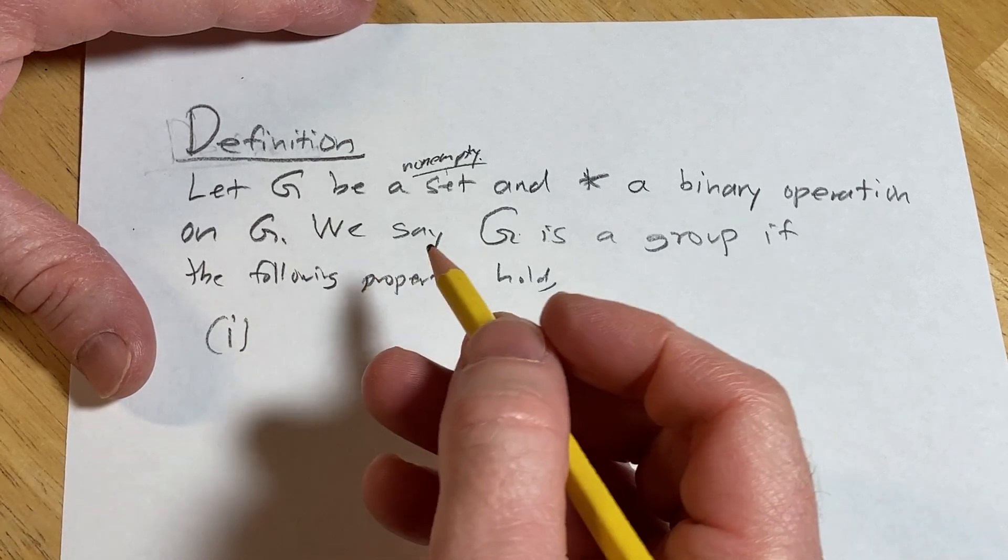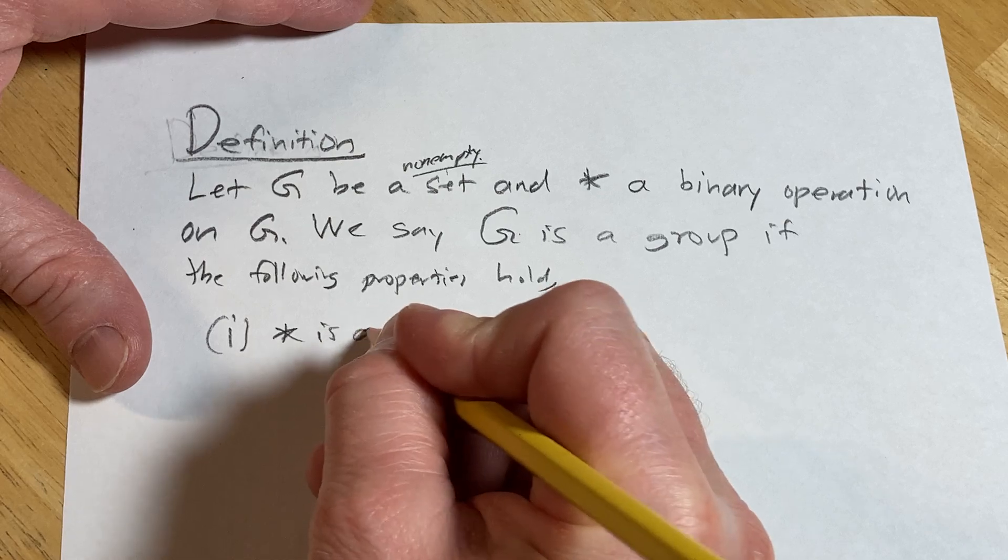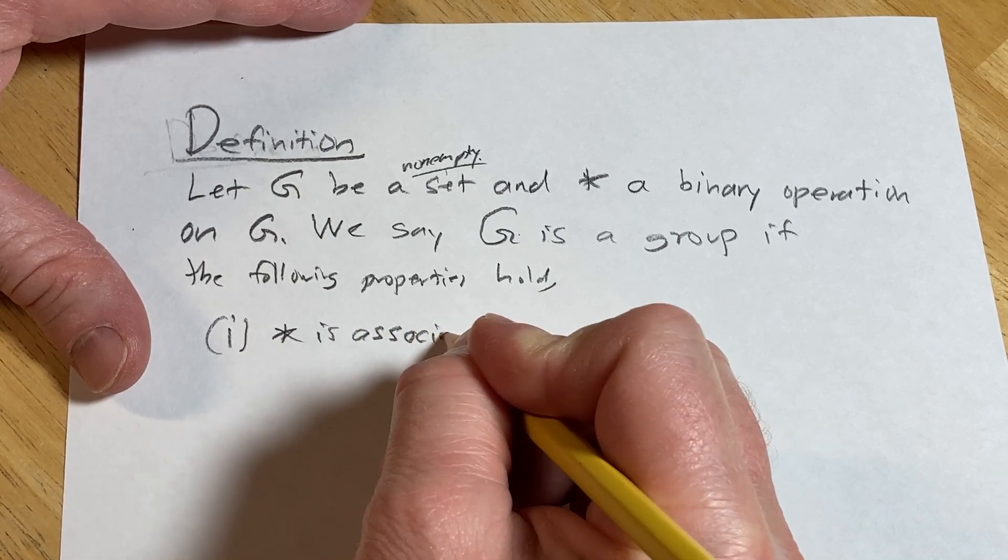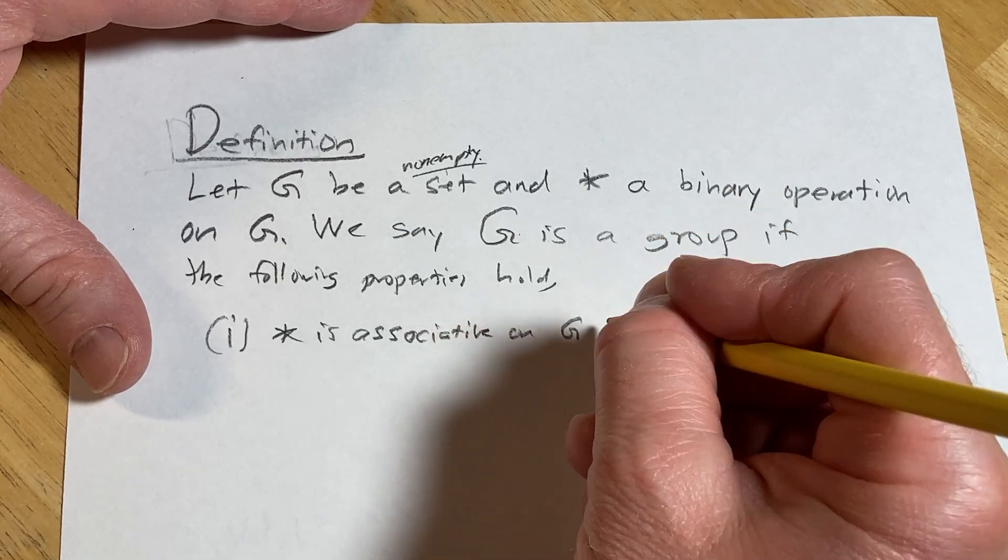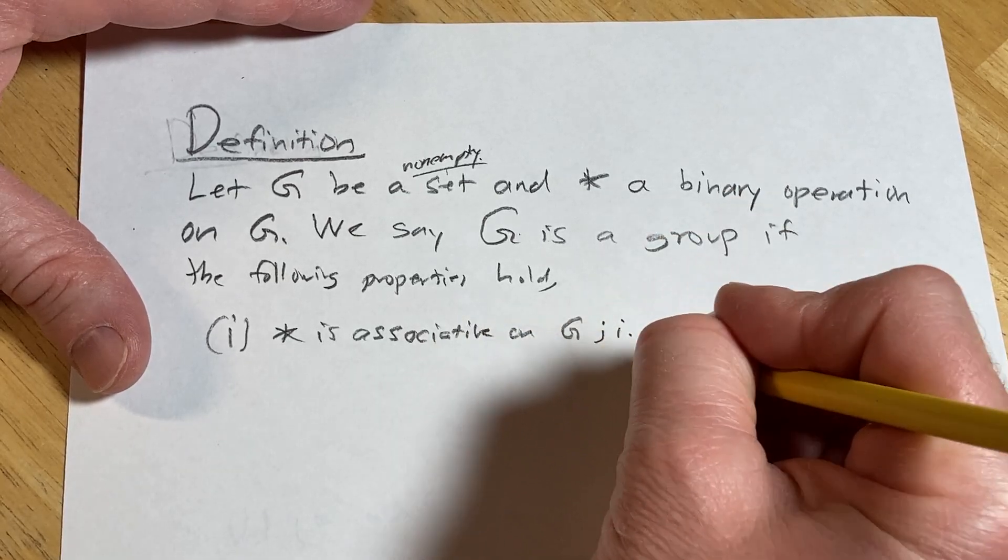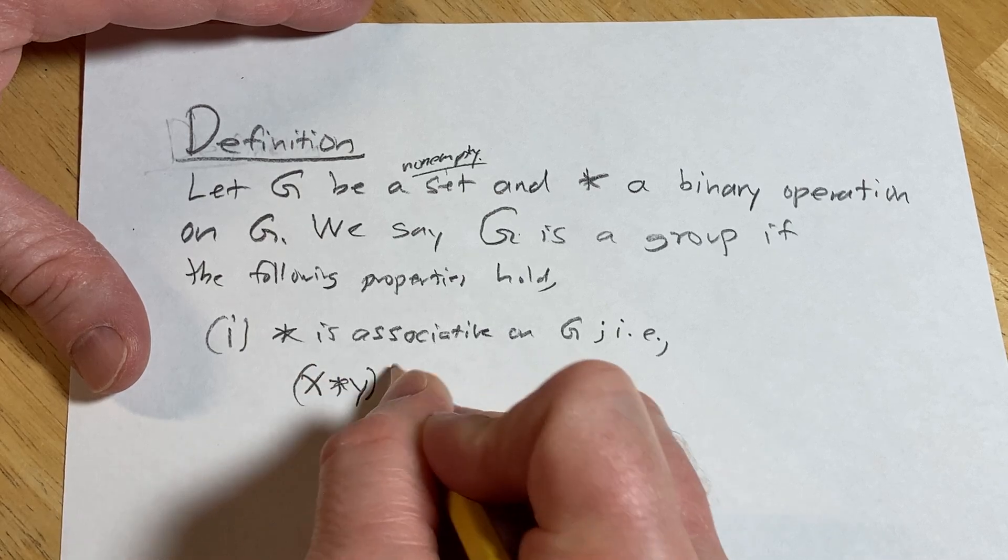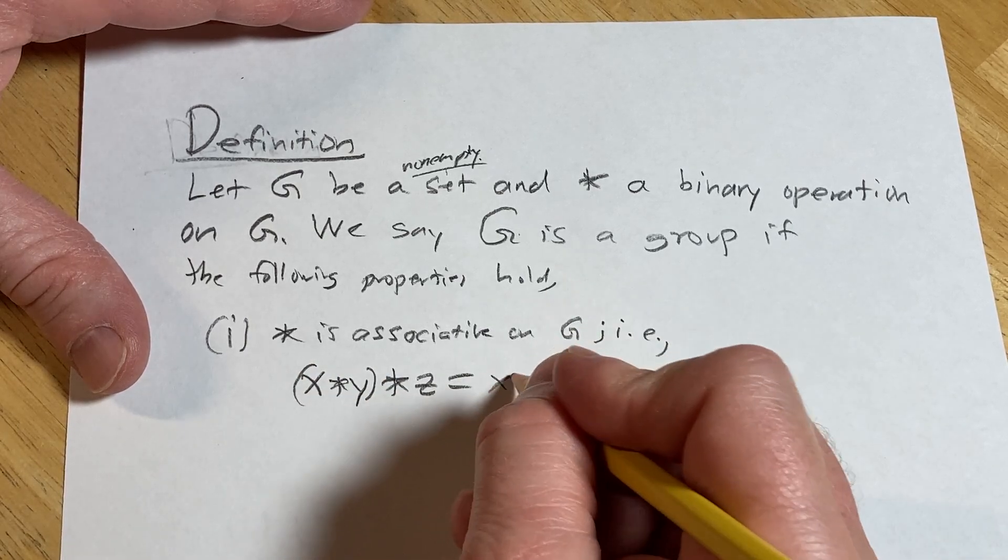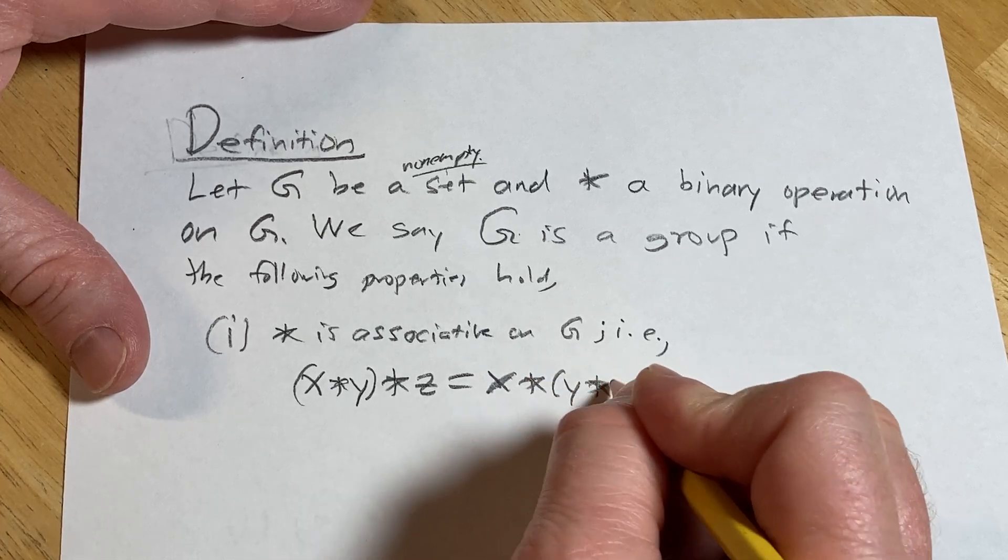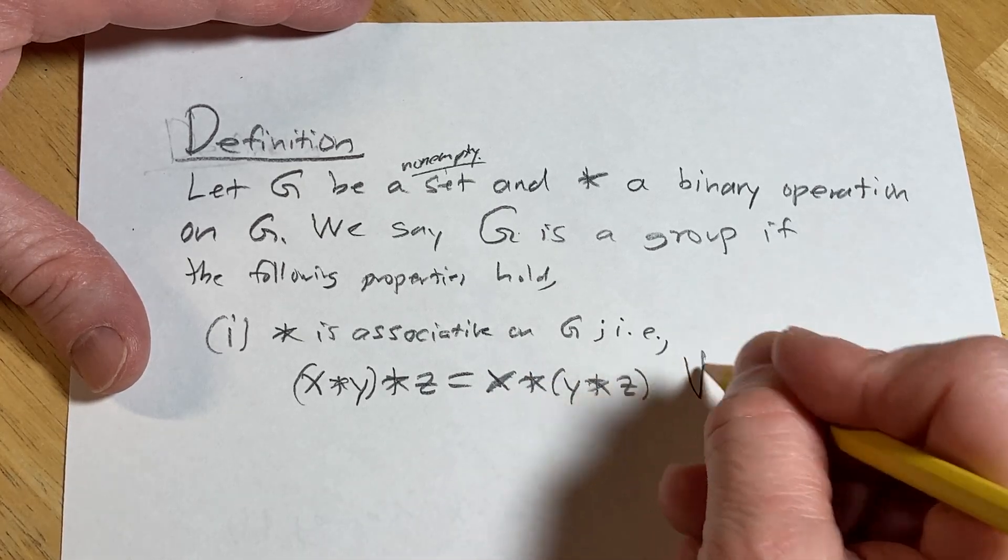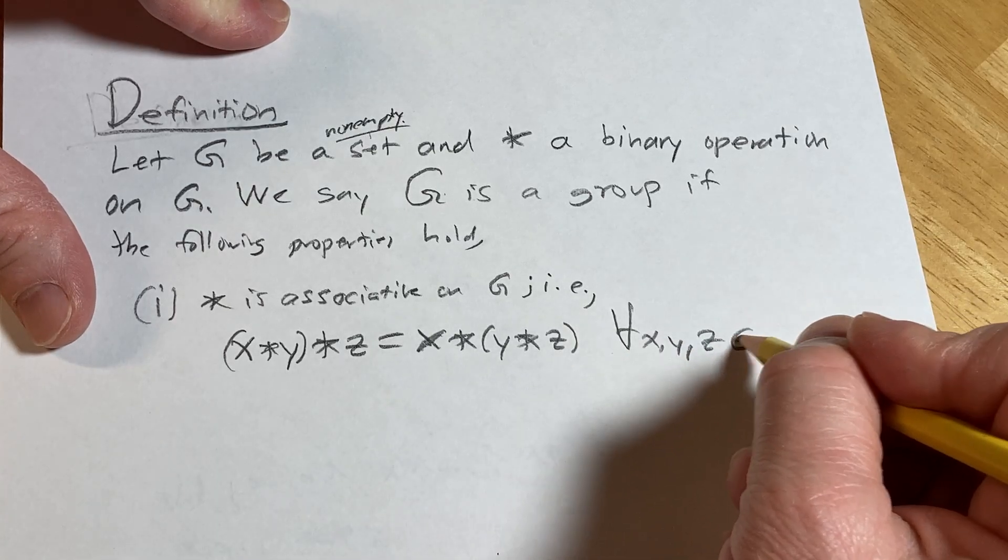One, star is associative on G. It's just an associative binary operation on G. What does that mean? That means x star (y star z) is equal to (x star y) star z. And this is going to be true for all x, y, z in G.